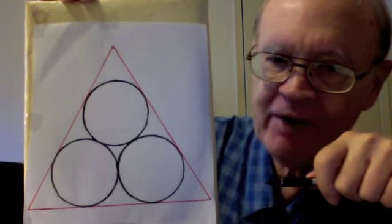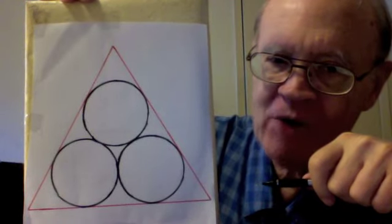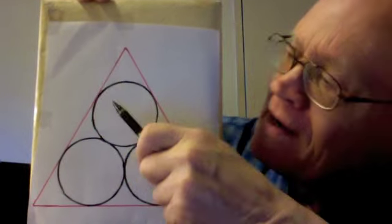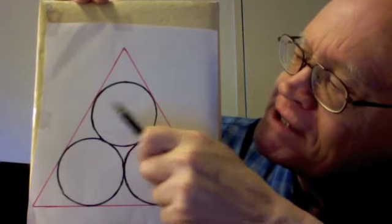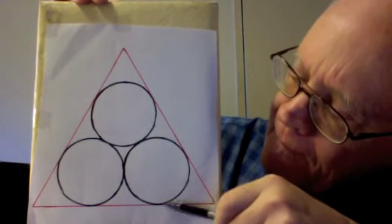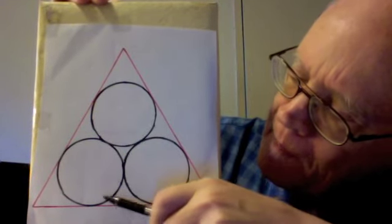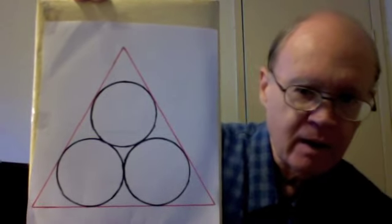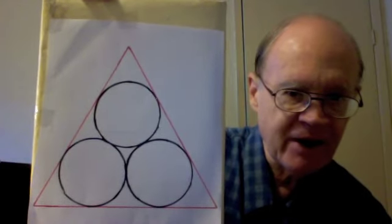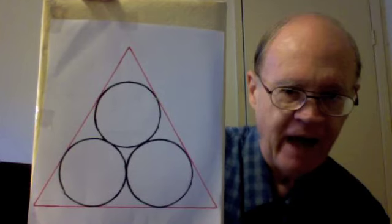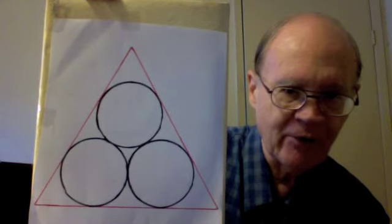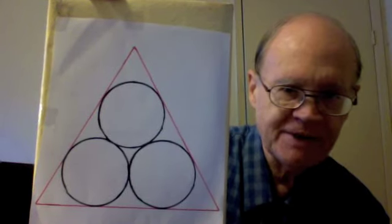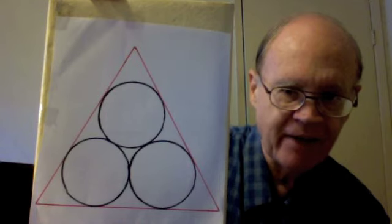And surrounding them we have this triangle, which is tangent to the circles at these six points. That necessarily makes this triangle an equilateral triangle, meaning that all three of its sides are the same length.